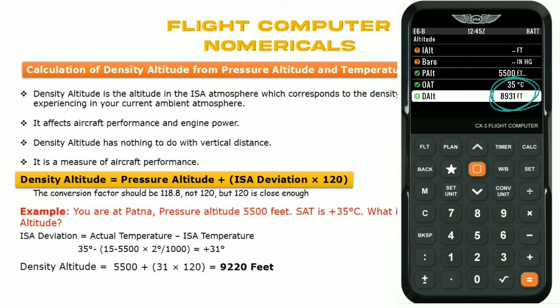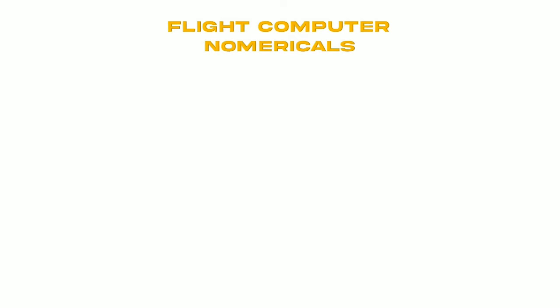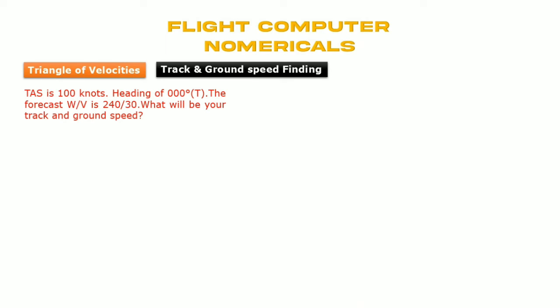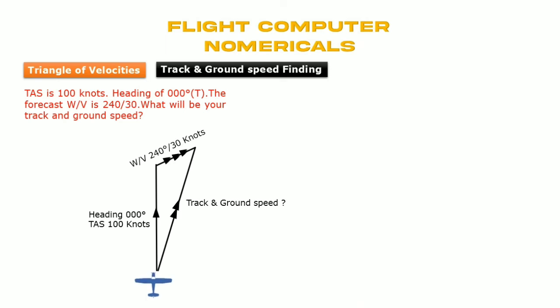Triangle of velocity — we'll learn how to find track and ground speed. Example: heading is 000 degrees true (360 degrees true) with TAS 100 knots, denoted with a single arrow. Wind velocity is coming from 240 degrees at 30 knots, coming from the left, denoted with a triple arrow. The track will be to the right side of heading, denoted by a double arrow.